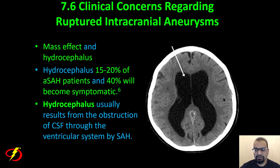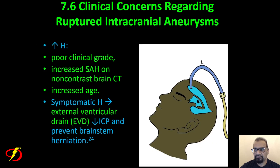Another issue with aneurysmal subarachnoid hemorrhage is mass effect and hydrocephalus. Hydrocephalus — disproportional swelling of the ventricles — occurs in 15 to 20 percent of all aneurysmal subarachnoid hemorrhage patients, and 40 percent of these patients will become symptomatic. It usually results from obstruction of cerebrospinal fluid through the ventricular system. Increasing hydrocephalus is associated with poor clinical grades, increased concentration of subarachnoid hemorrhage on CT, and increased age. Symptomatic hydrocephalus requires an external ventricular drain (EVD).